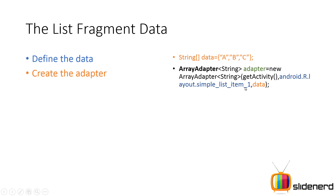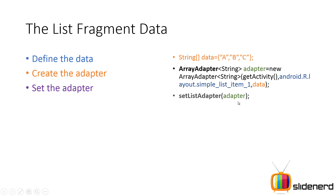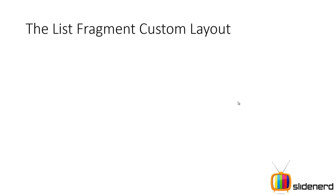You specify some appearance for the data and create the appearance. Then you simply set the adapter by calling setListAdapter. After this you can go ahead and set the onItemClickListener to handle the response.